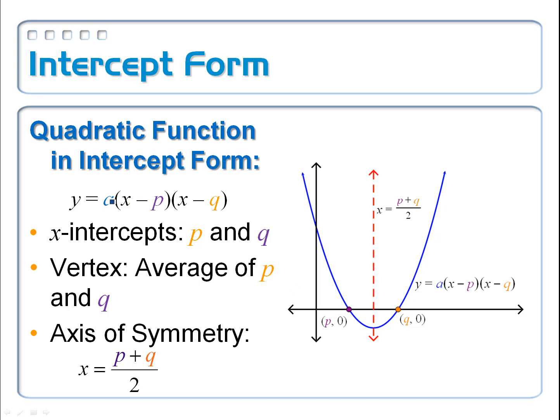In order to find the y-coordinate, I just stick it back in. How would I find the y-intercept? Well, the y-intercept is just where x is equal to 0. So you just plug 0 in for each of these. And you can see that it would just be simply a times negative p times negative q. And that would be the y-intercept.